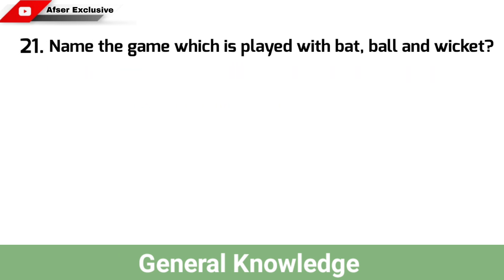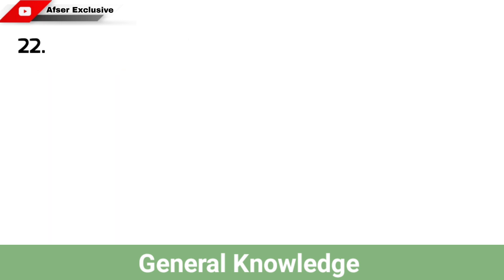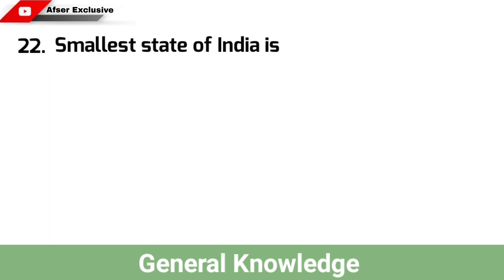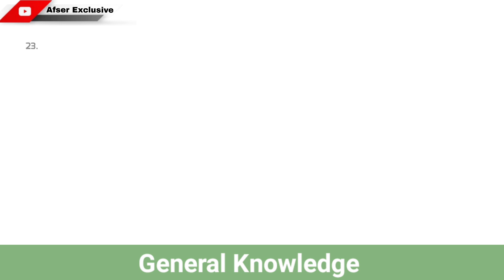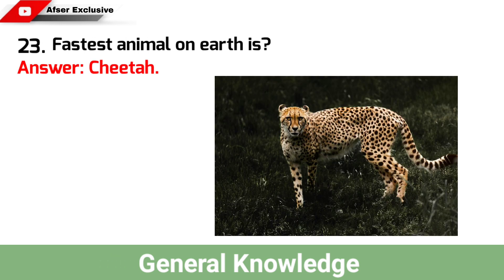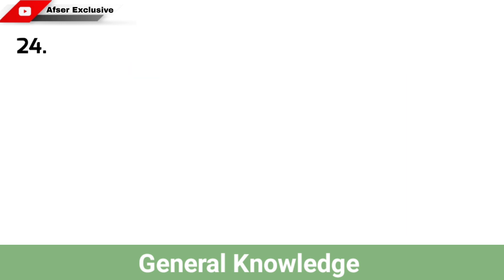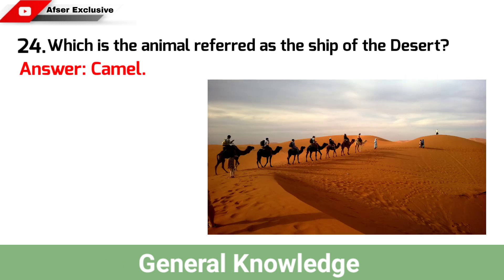Name the game which is played with bat, ball and wicket? Answer: Cricket. Smallest state of India is? Answer: Goa. Fastest animal on Earth is? Answer: Cheetah. Which animal is referred to as the ship of the desert? Answer: Camel.